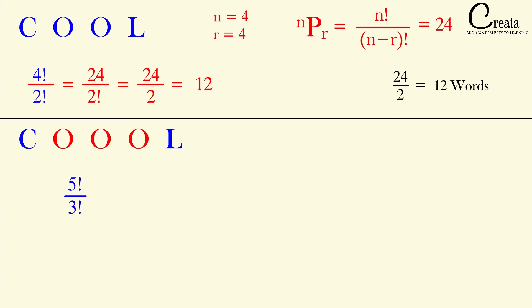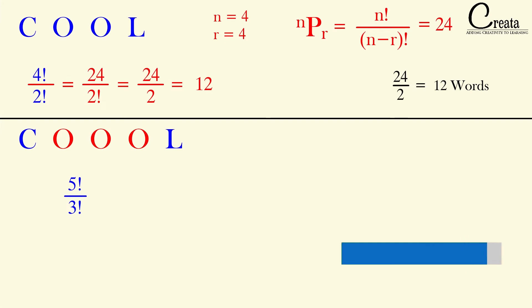In the previous case, we divided by 2 factorial because the letter O was repeating 2 times. We have to divide the traditional answer by the factorial of the number of times the letter is repeating. In the first case, O repeated 2 times; in the second case, O repeated 3 times. This is the basic fundamental.